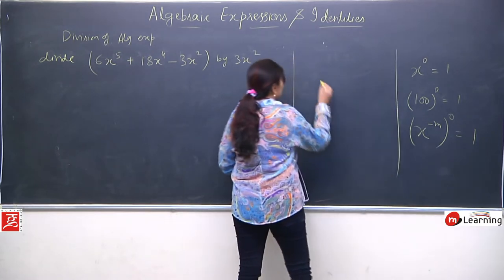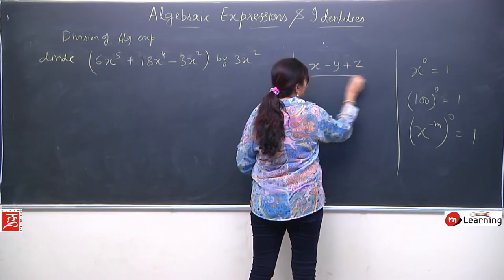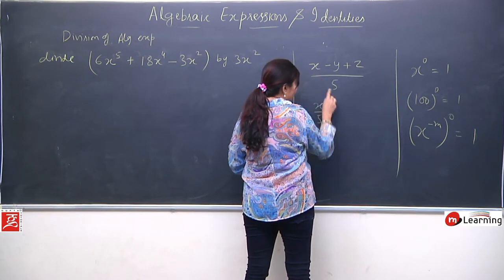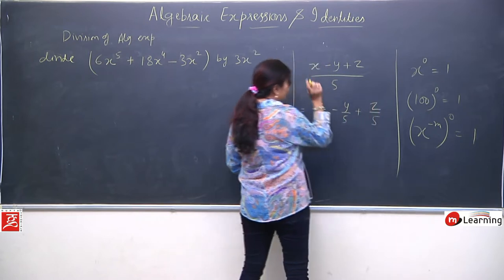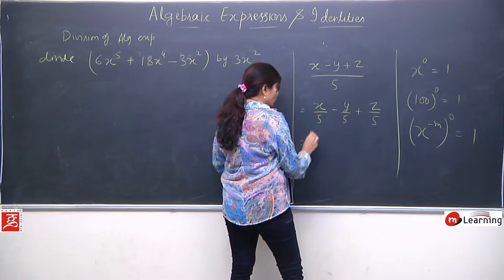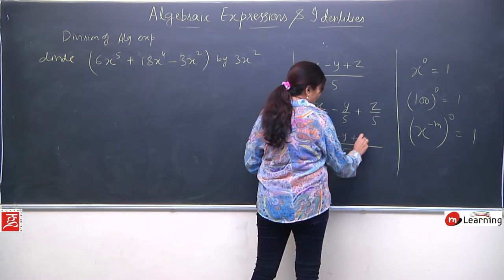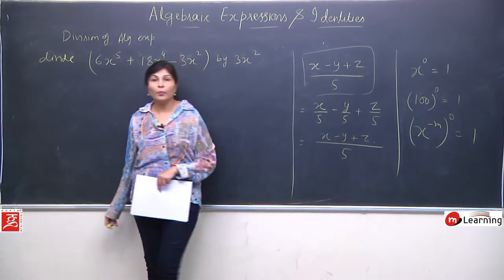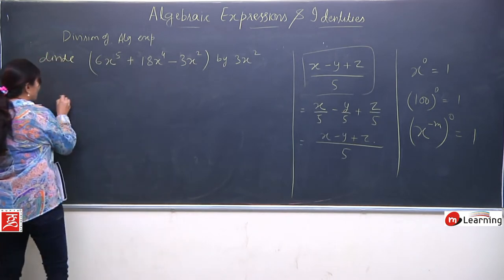Agar humare paas x minus y plus z upon 5 hai, to hum usse kaise likh sakte hain? Hum separate karke bhi likh sakte hain: x upon 5, minus y upon 5, plus z upon 5. Humne kya kiya? Term ko individually separate kar liya. Agar aapko lag raha hai ki hum aisa kyun likhein, to aap vaapas se iska LCM lein — you will get the same term. So this is called separation of terms. Yeh cheez aapko dhyaan rakhni hogi jab bhi aap is tarah ka division solve karenge.